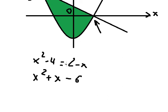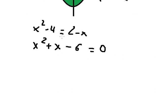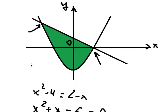We get x² + x - 6 = 0. So x equals positive 2 and negative 3. This gives us negative 3 here and positive 2 here.